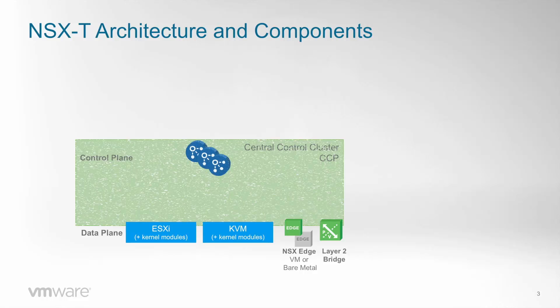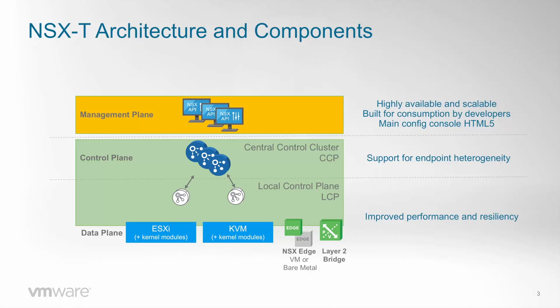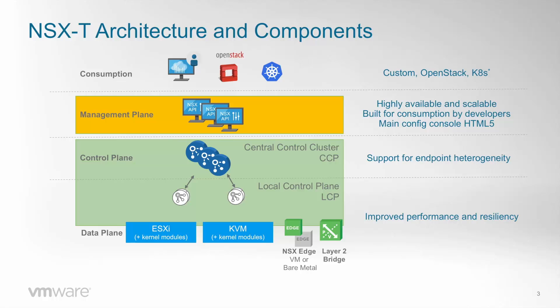On the control plane, there is a highly available control cluster that has the runtime state of the environment. There is a local control plane component that runs on the host and establishes the connection back to the control cluster. On the management plane, there is also a cluster of NSX managers, where all configuration is done either through APIs or the GUI. NSX-T can be consumed either through OpenStack, container orchestration platforms, or any other mechanism that calls the NSX APIs.